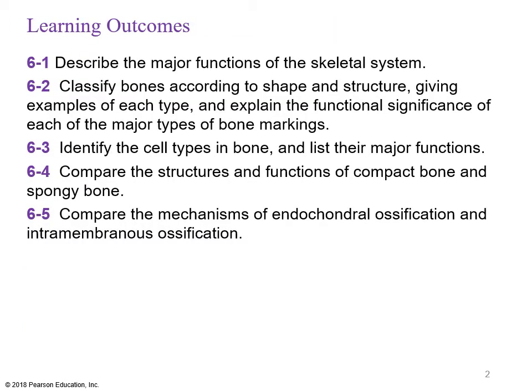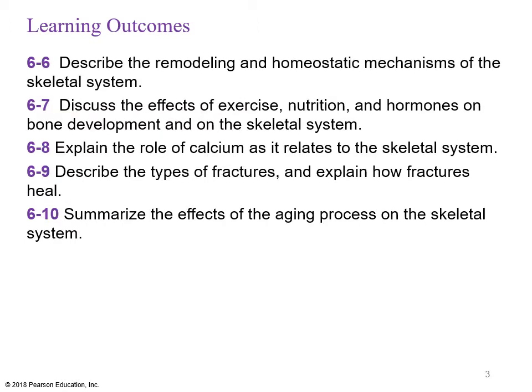We're going to describe the major functions of the skeletal system, classify bones — we've done a lot of this in lab already — and identify the different cell types in bone beyond just the osteoblast and osteoclast. We'll look at osteocytes and compare structures and functions of compact bone versus spongy bone. We'll compare the mechanisms of endochondral ossification versus intramembranous ossification. Endochondral ossification is making bone out of cartilage; intramembranous ossification involves making bone from a membrane.